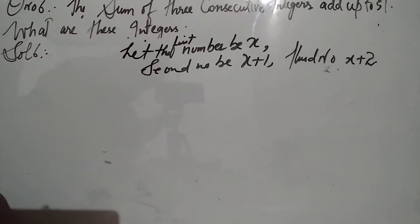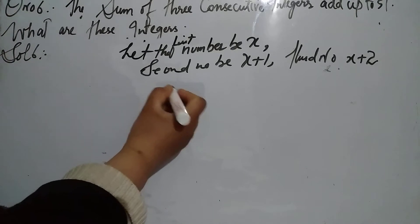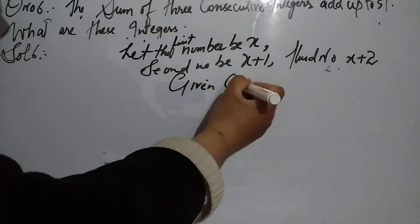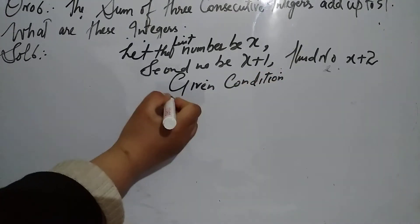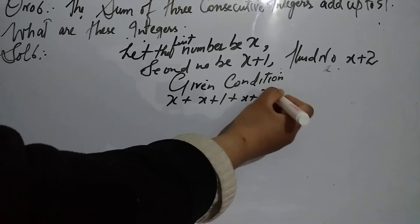Now according to the question, the given condition is that x plus (x plus 1) plus (x plus 2) is equal to 51.